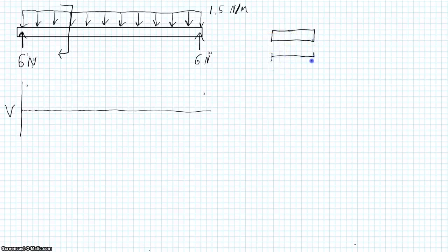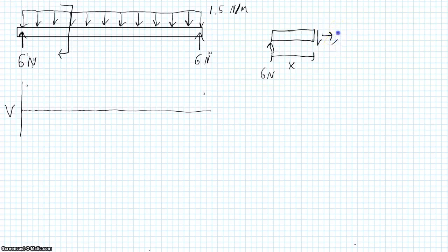We have a cut of width x. We have our 6 newton force on the right hand side. We have our shear, our normal force, which in this example is 0, and our moment that's at the cut.